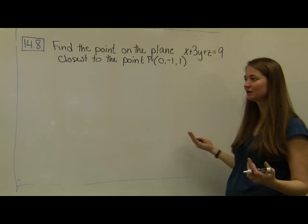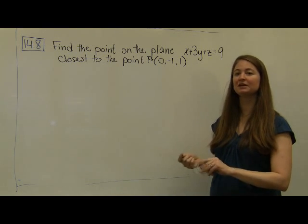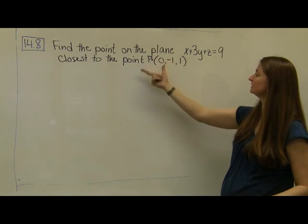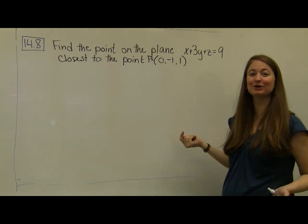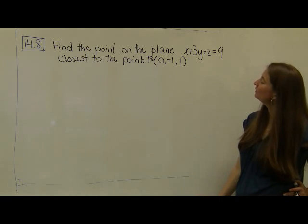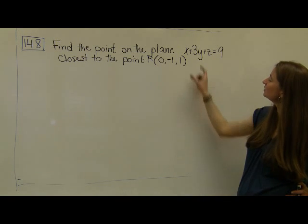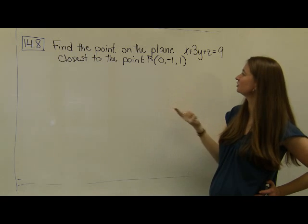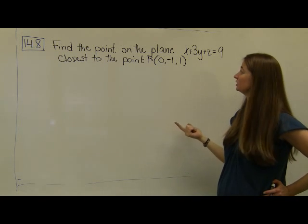We've talked about this before and used projections and lines through planes to find the minimized distance point. Now we're going to use Lagrange multipliers. One of the problems is that they don't really give this in terms of what our f function is and what our constraint function is, so we actually have to create those functions.